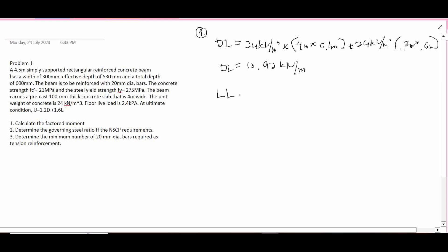Next is the live load. Live load is floor live load, 2.4 kPa multiplied by the width 4 meters, equals to 9.6 kilonewton per meter. This unit shall be consistent in order to add, so our U now will be 1.2 dead load plus 1.6 live load. 1.2 times 13.92 plus 1.6 times 9.6. Our ultimate load is 32.064 kilonewton per meter.